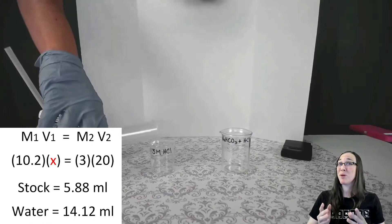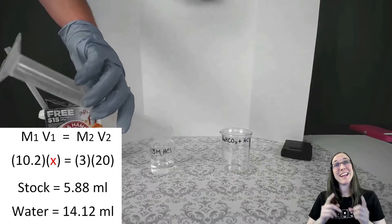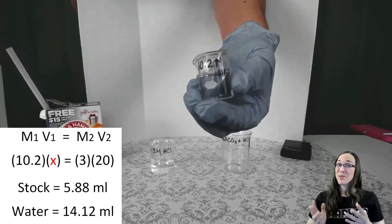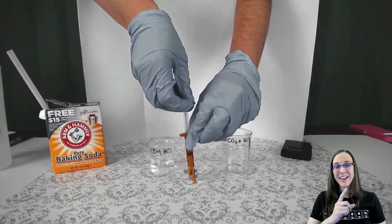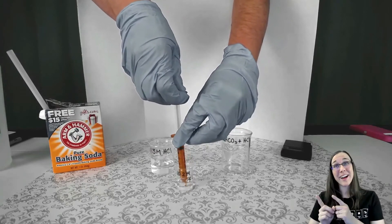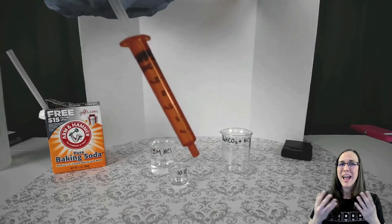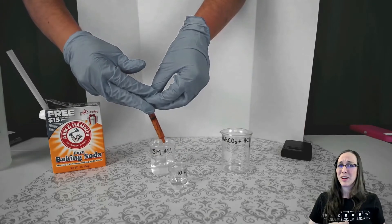Measuring out our 14.12 milliliters of water, we can add that to our beaker now. And of course, anytime we're making an acidic solution, we need to do as you oughta and add acid to water. That means it's more dilute, so if it happened to spill on you it wouldn't hurt so bad. It's a safety precaution really.